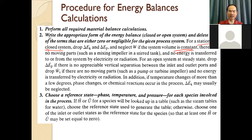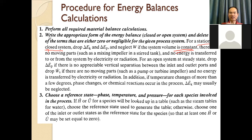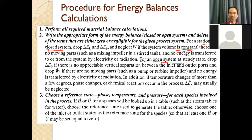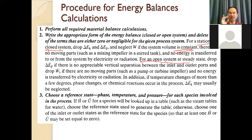Work is zero if there is no moving parts — like mixing, stirring — and also no energy transfer between the system and surroundings by electricity or radiation. For the open system, similarly, if there is no significant elevation difference, you can neglect potential energy. Work can also be neglected if there is no moving parts such as a pump or turbine, and no energy transfer by electricity or radiation. For both open and closed systems, we can cancel kinetic energy if there is no moving path and no electricity or radiation.